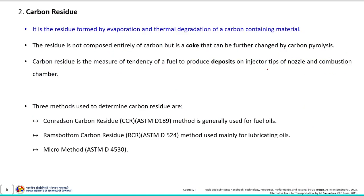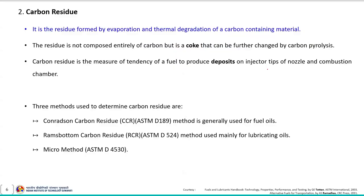The next characteristic is carbon residue. It is the residue formed by the evaporation and thermal degradation of carbon-containing material. This residue is not composed entirely of carbon but is a coke that can be further changed by carbon pyrolysis. Carbon residue is a measure of the tendency of a fuel to produce deposits on injector tips, nozzle, and the combustion chamber. There are methods available to estimate this carbon residue in the fuel.